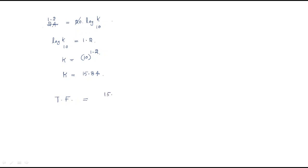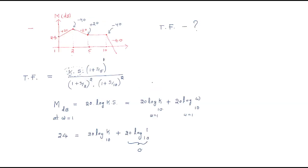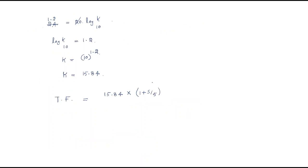Finally, the transfer function is: G(s) = 15.84 · (1 + s/5) / [(1 + s/2)² · (1 + s/10)²]. The numerator has the zero at corner frequency 5, and the denominator has double poles at corner frequencies 2 and 10.